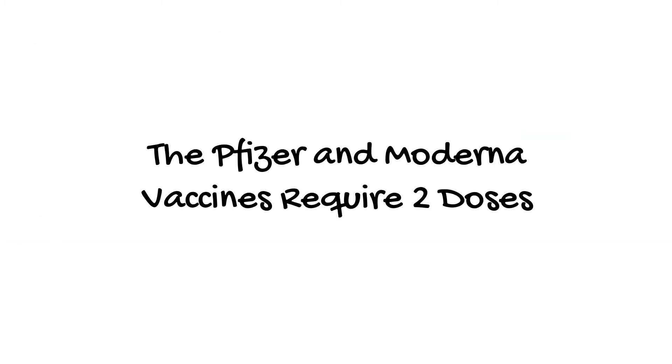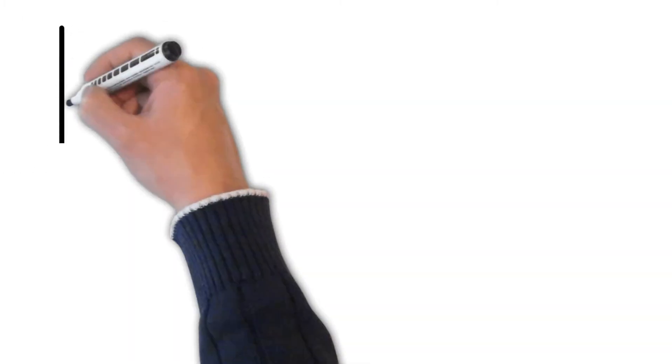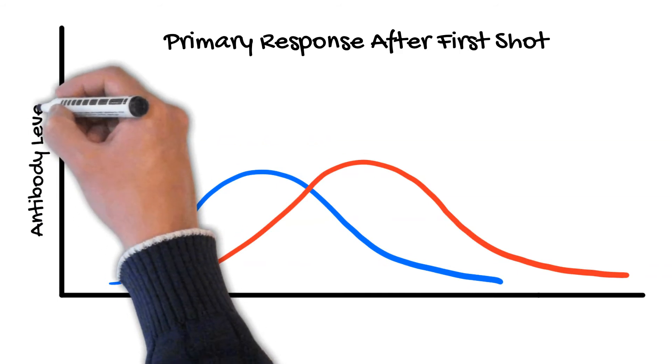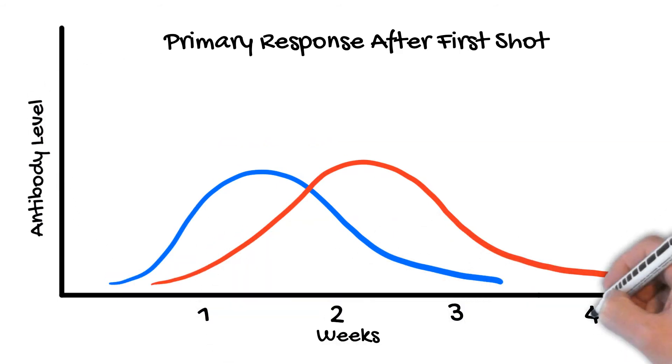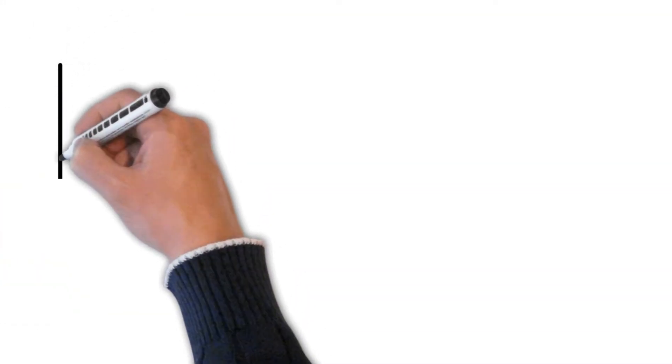The vaccine will be given in two doses to provide sufficient protection. After the first vaccine dose, it'll take a couple weeks for the B cells, or if you recall, the plasma cells to produce and release the antibodies. And even once those antibodies are created, their concentration starts to decrease fairly quickly. That's why the second shot is needed.